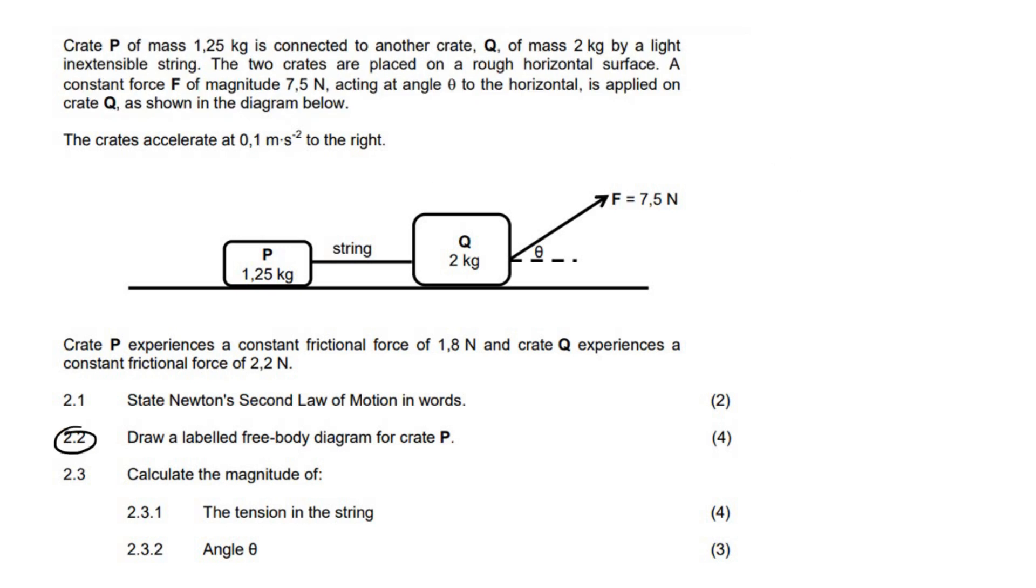This question says draw a labeled free body diagram for Crate P and it's for four marks. So there's going to be four different things we need to take into account. There's always going to be gravity, you could also call that W. There's a normal force, there will be friction, and there will be tension because of this rope. So there we have one, two, three, four forces for four marks.